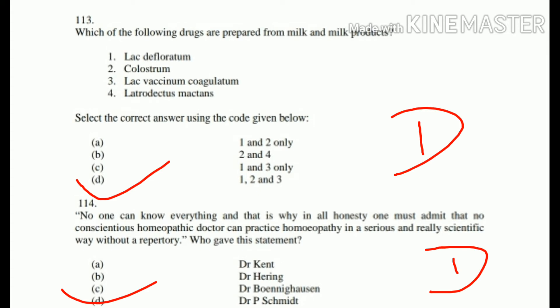Question number 113: Which of the following drugs are prepared from milk and milk products? Options: 1. Lac D, 2. Floratum, 3. Cholesterol, 4. Lac Vaccinum Coagulatum, 5. Latrodectus Mactans. Select using the code given below. Options 1, 2, and 3 are right — Option D is correct.